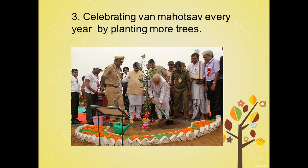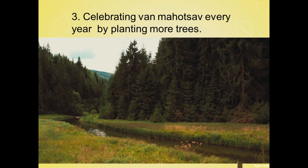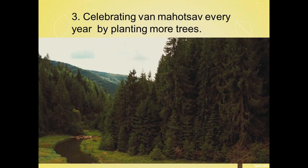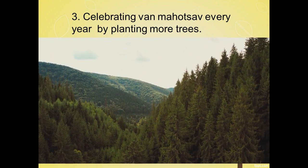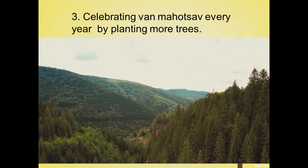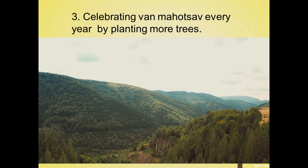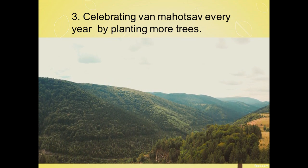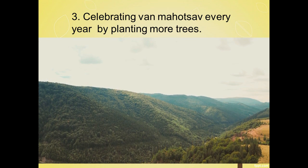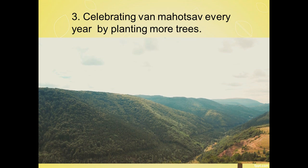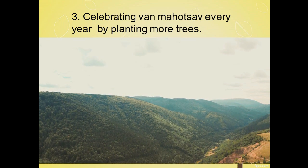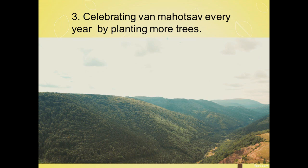We celebrate every year from 1st July to 7th July as Van Mahotsav. During Van Mahotsav, more and more saplings of plants are planted around us — in our neighborhood areas, in schools, in colleges, and offices. The motto of Van Mahotsav is to promote planting of more and more trees around us and to make people aware about the importance of trees. We celebrate this every year in the first week of July.